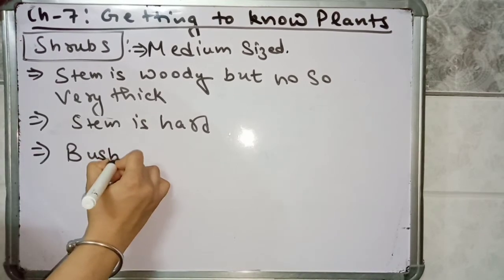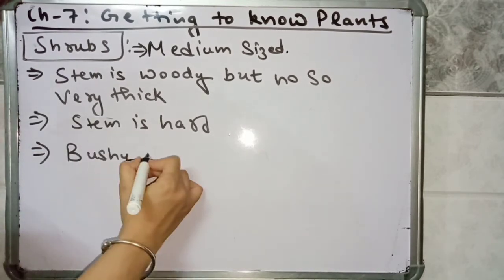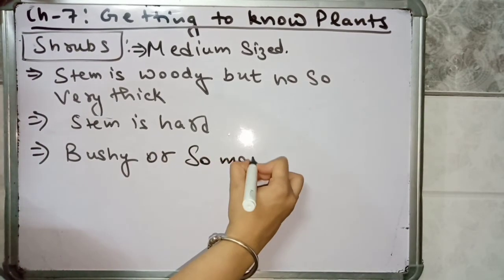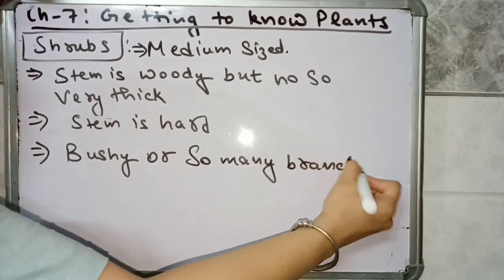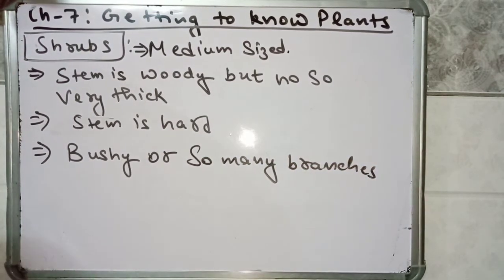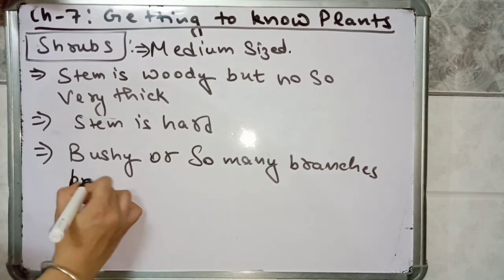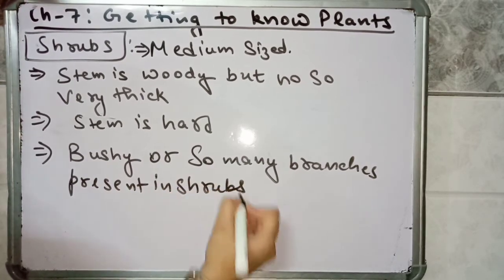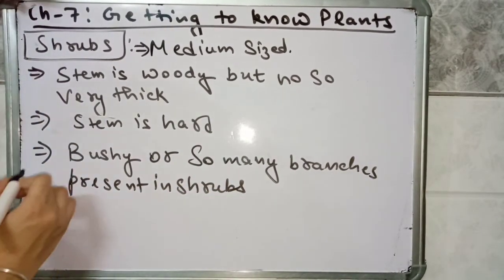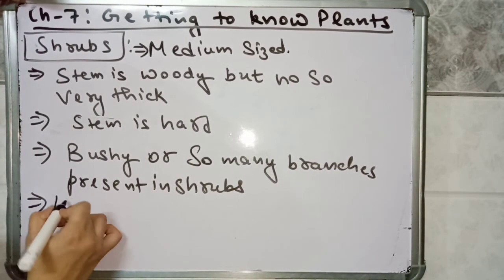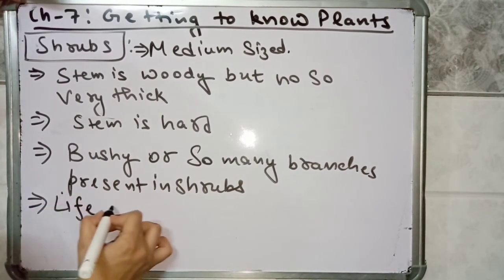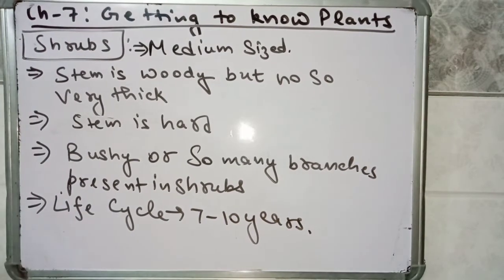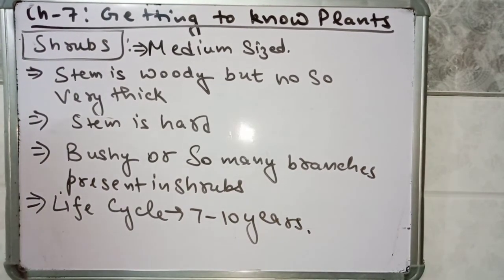Shrub plants are very bushy. Bushy means so many branches are present in shrubs. And if we talk about their life span or life cycle, the life cycle of a shrub plant is 7 to 10 years.